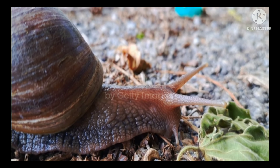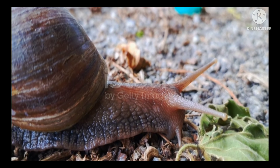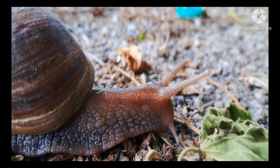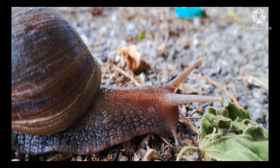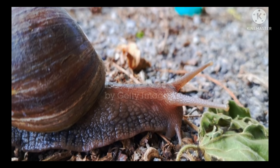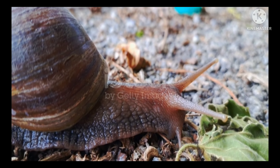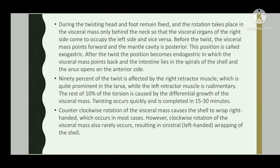Ninety percent of the twist is effected by the right retractor muscle, which is quite prominent in the larva, while the left retractor muscle is rudimentary. The remaining 10 percent of the torsion is caused by the differential growth of the visceral mass.